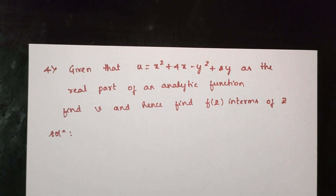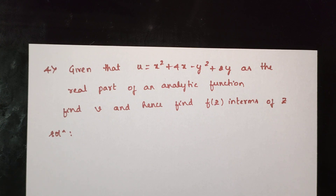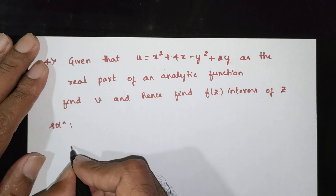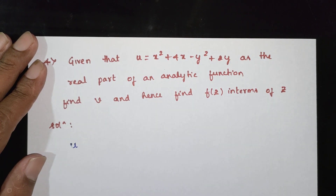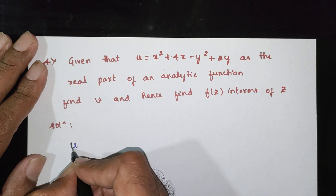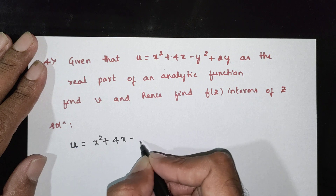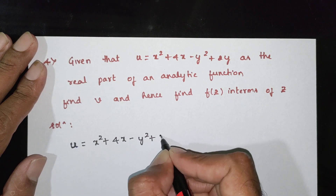Given that x squared plus 4x minus y squared plus 2y is the real part of an analytical function, find v and hence find f of z in terms of z. The question here is how to do the harmonic parts — how to identify the real part and imaginary part. So u is equal to x squared plus 4x minus y squared plus 2y.